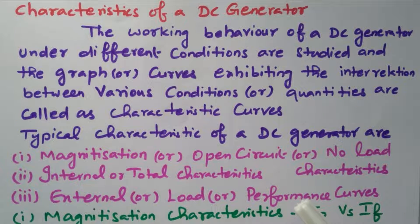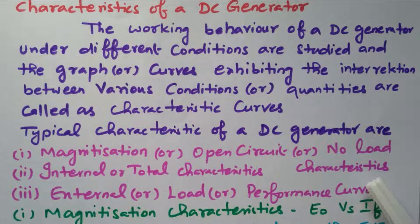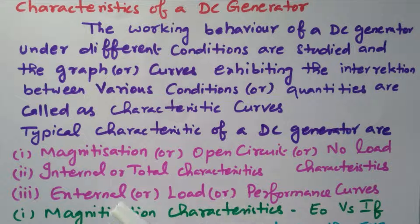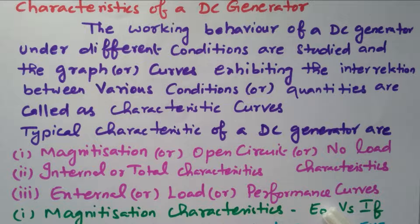There are three types of characteristics available. The first one is the magnetization or open circuit or no-load characteristics — without any load, so that is called a no-load or open circuit characteristics. The second one is internal or total characteristics — the voltage or current available inside the armature. The third is external or load or performance curve — the current and voltage available at the output terminal, the load terminal.